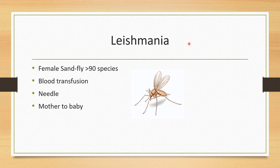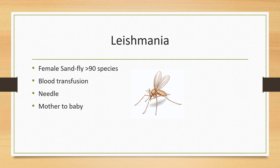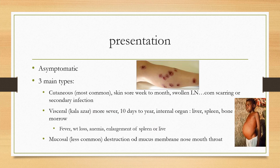Leishmaniasis is transmitted mainly by the female sandfly of about 90 species. Other transmission routes include blood transfusion, needlestick injury, and mother-to-child transmission. Clinical presentation can be asymptomatic.